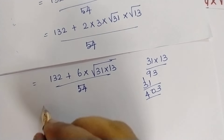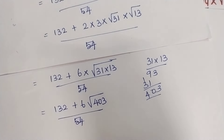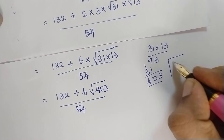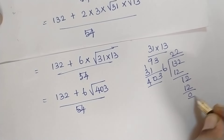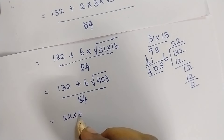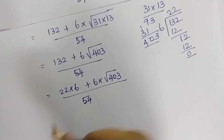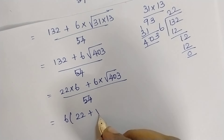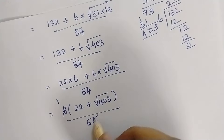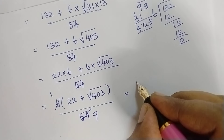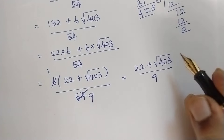Divided by 54. So this equals 132 plus 6 multiplied by root 403, divided by 54. Since 6 is common, we take it out. 132 divided by 6 is 22. So we write this as 6 multiplied by 22 plus 6 multiplied by root 403, divided by 54. Taking 6 out: 22 plus root 403 divided by 9.